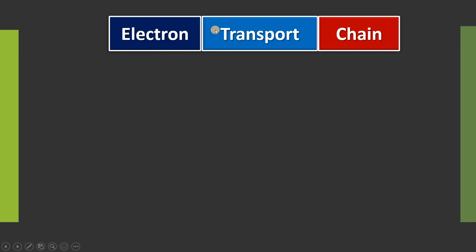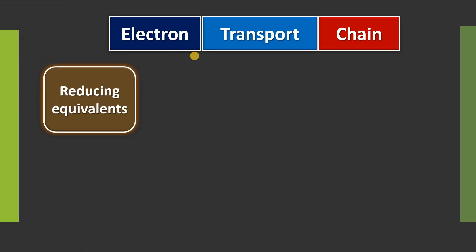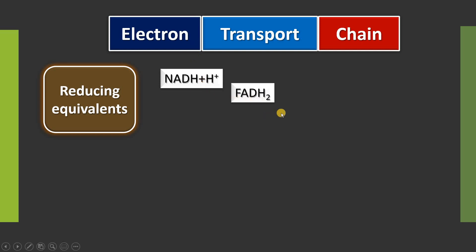When we say electron transport chain, that means there is transport of electrons across a series of proteins or complexes which are located in the inner mitochondrial membrane. So where are these electrons coming from? These electrons are donated by reducing equivalents which we already studied in glycolysis and TCA cycle, where there is generation of reducing equivalents which carry high-energy electrons in the form of NADH and FADH2.